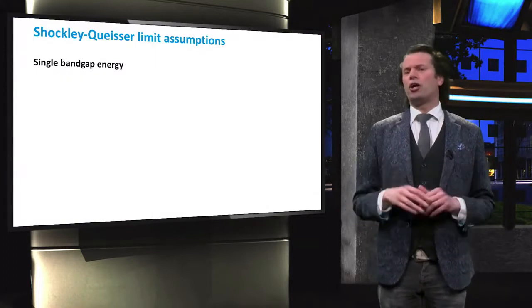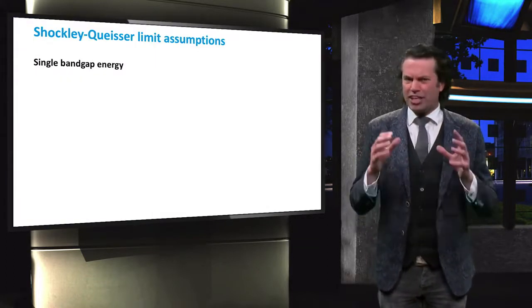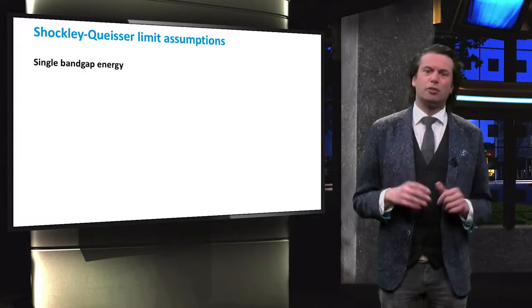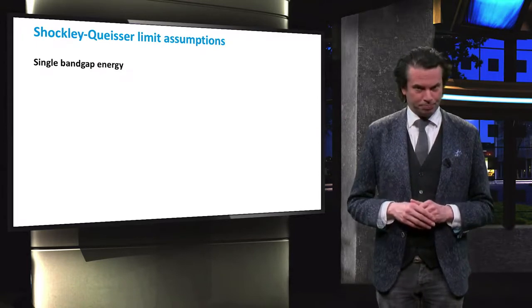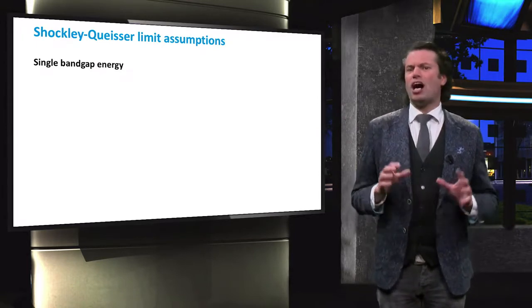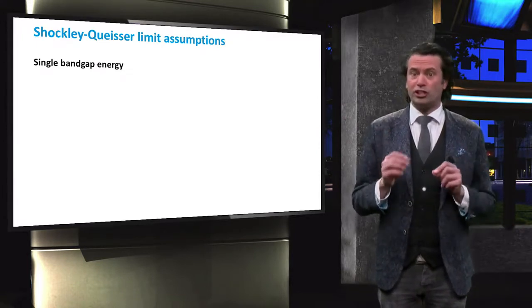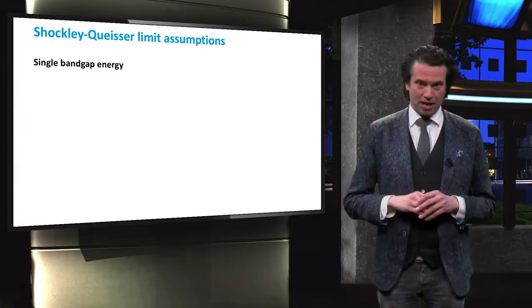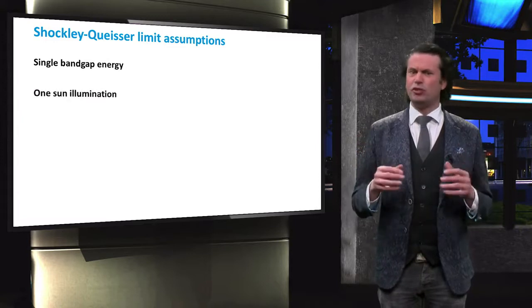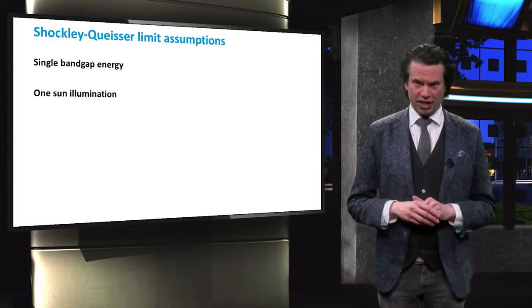The learning objectives for this video are to get an understanding of the concepts that challenge the basic assumptions upon which the Schockley-Kweiser limit is founded. Those assumptions are that the solar cell consists of one junction with a single bandgap energy, and that the cell receives one sun illumination.